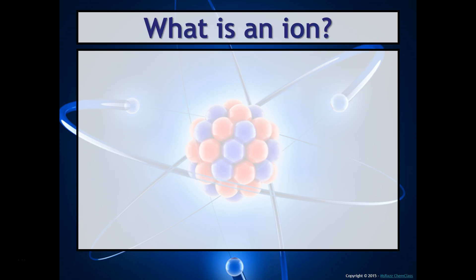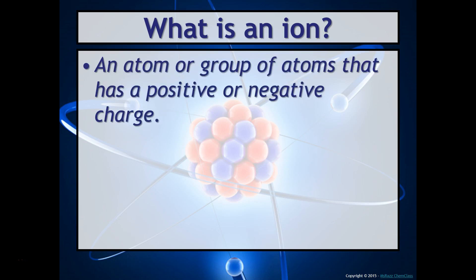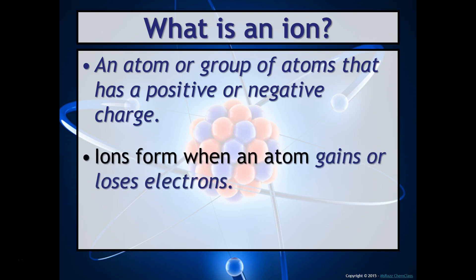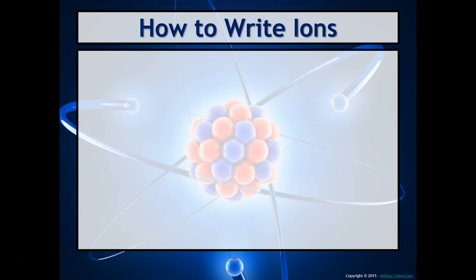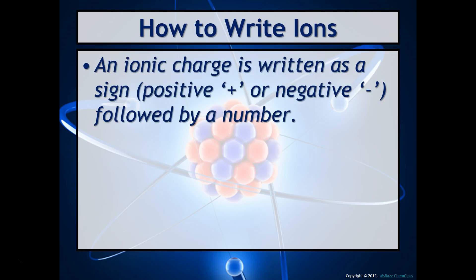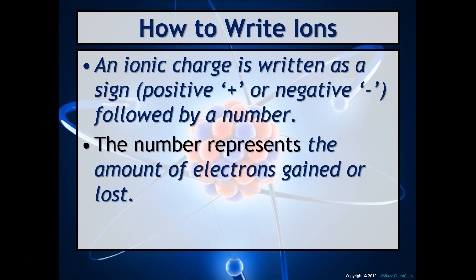First, what's an ion? Well, an ion is an atom or group of atoms that has a positive or negative charge. Ions form when an atom gains or loses electrons. You can write ions by quite simply adding a positive or negative charge followed by a number. It's typically written in the upper right-hand corner, which you'll see. This number represents the amount of electrons gained or lost by that particular atom.